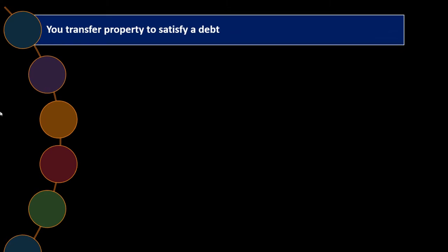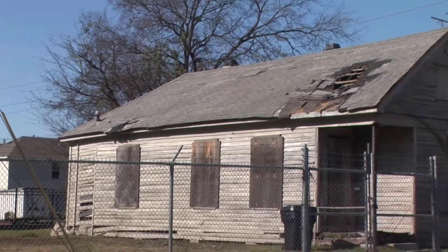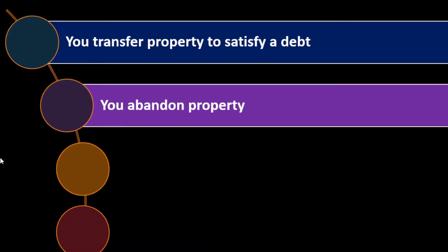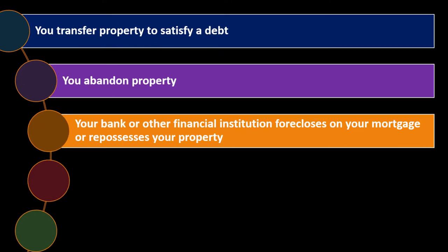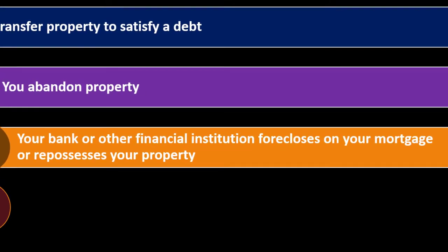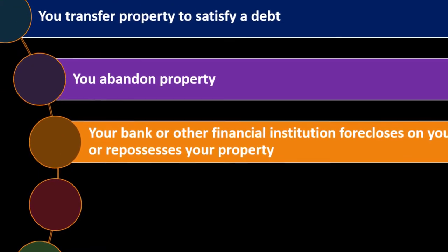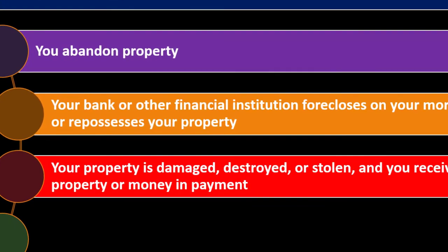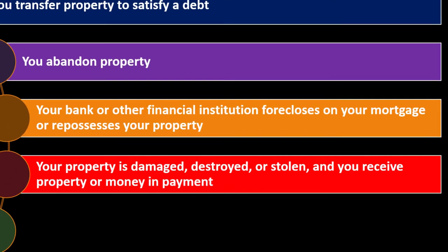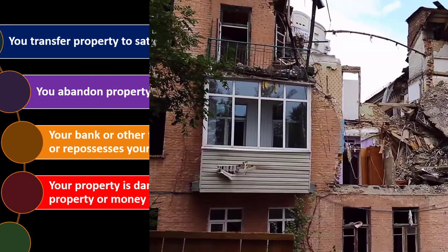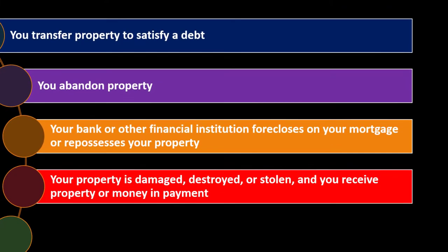Other dispositions include: you transfer property to satisfy a debt; you abandon property — even walking away from it counts as a disposition. Your bank or financial institution forecloses on your mortgage or repossesses your property — even though it's not voluntary, you still have a disposition to deal with from a tax standpoint. Your property is damaged, destroyed, or stolen and you receive property or money in payment, such as insurance proceeds.